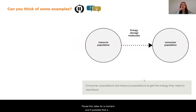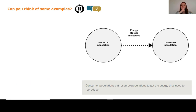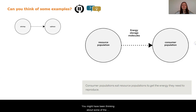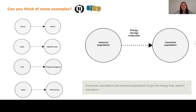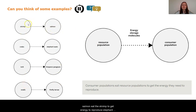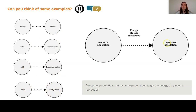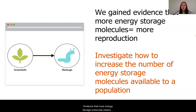We have the resource population feeding into the consumer population — for example, foxes eating voles. Can you think of some other examples of resource and consumer populations? The different articles introduced us to four types of organisms and their resource populations: salmon eat shrimp to get energy to reproduce, elephant seals eat crabs, emperor penguins eat krill, and firefly larvae eat snails. We gained evidence that more energy storage molecules means more reproduction.